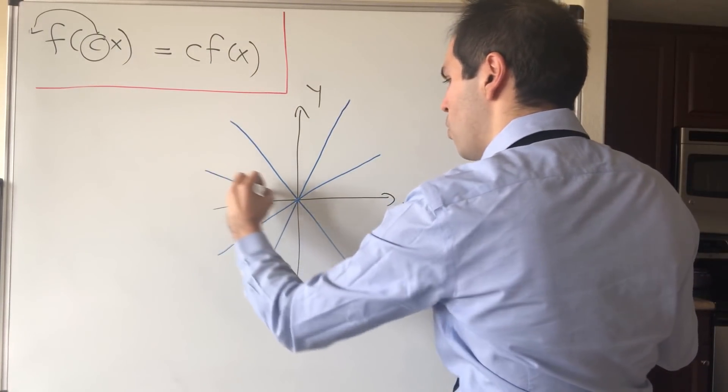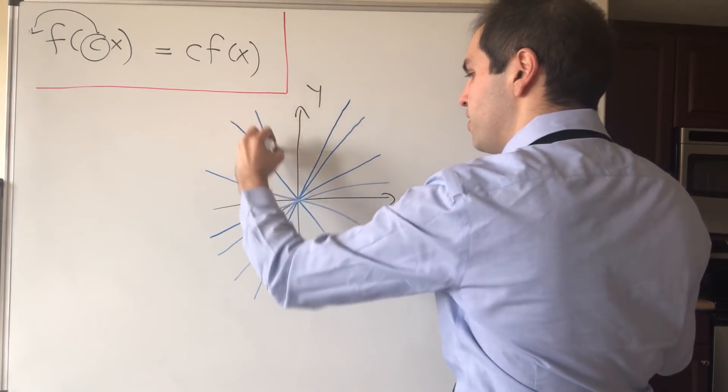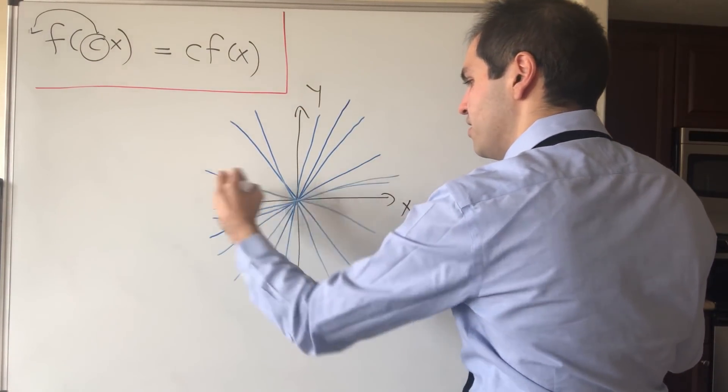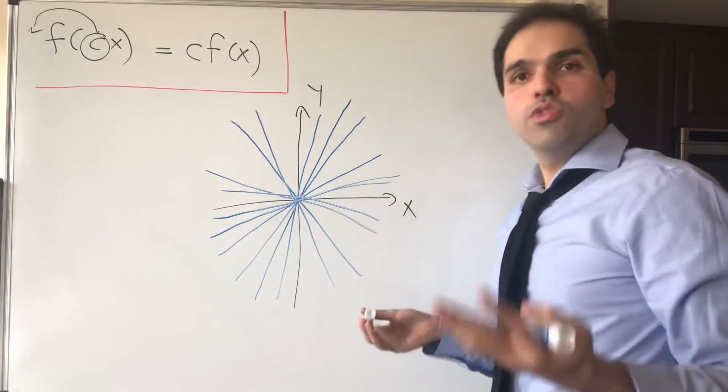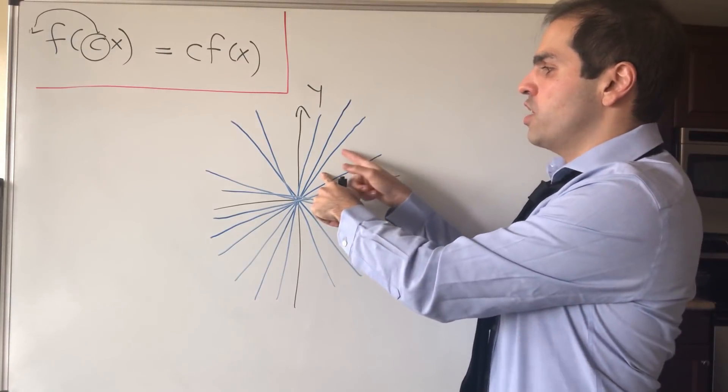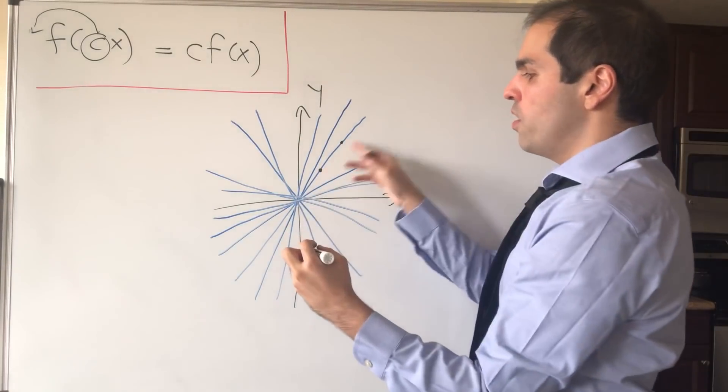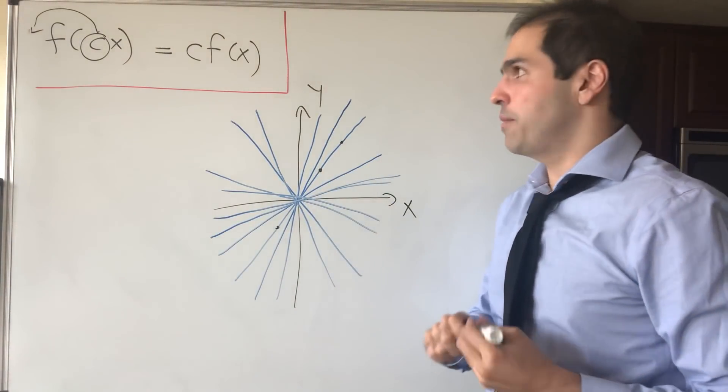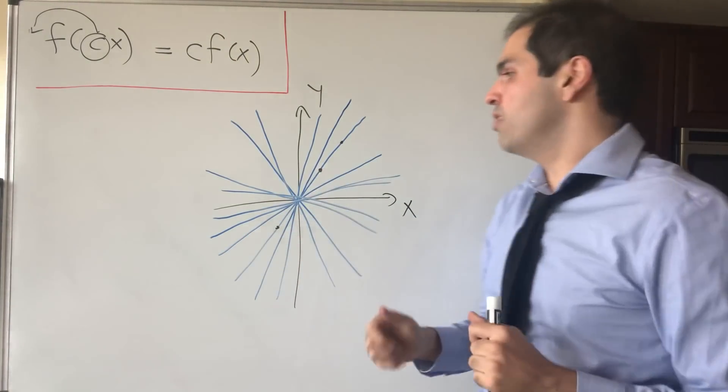In general, it's just all the one-dimensional subspaces of a vector space. Then what you do, you consider an equivalence class saying that two points are equivalent if and only if they lie on the same line. For instance, those two points are equivalent, but also this third point is equivalent, because they all lie on the same line.